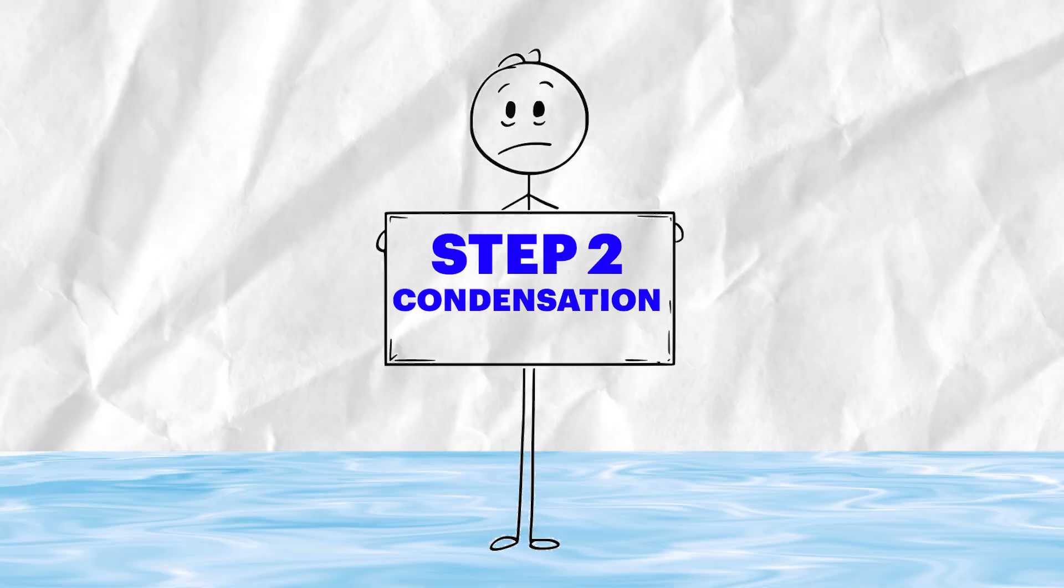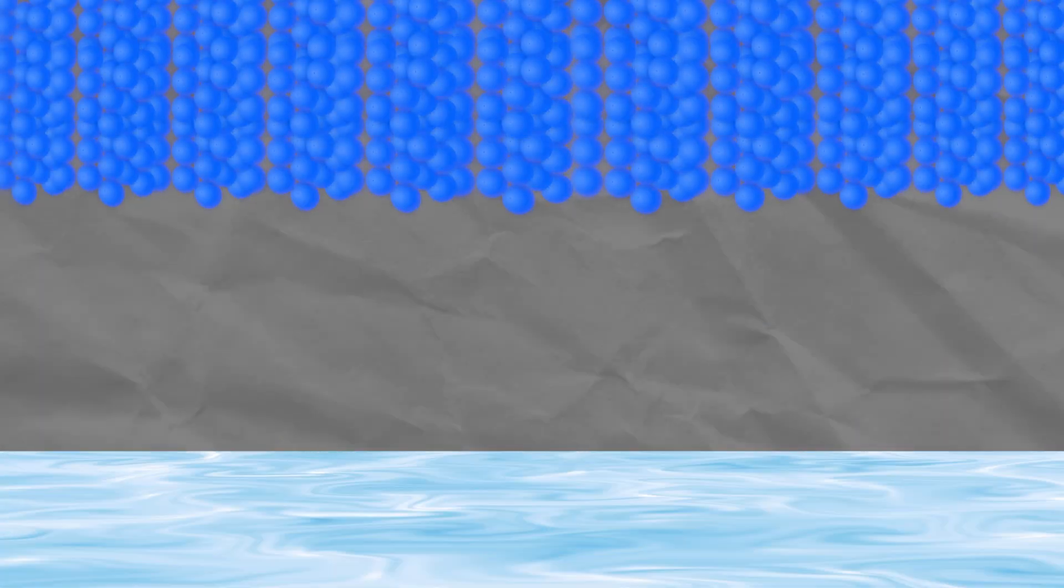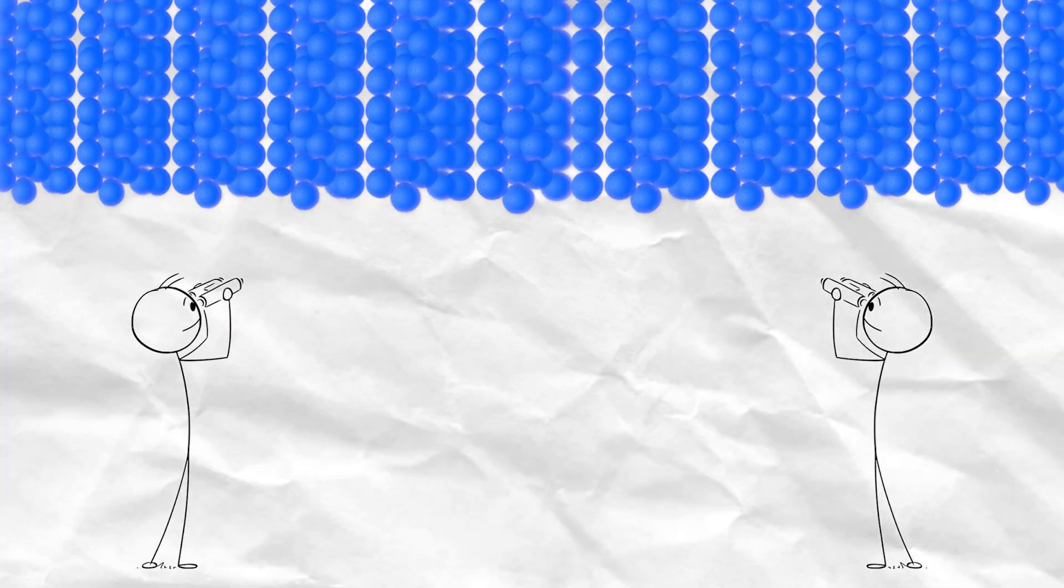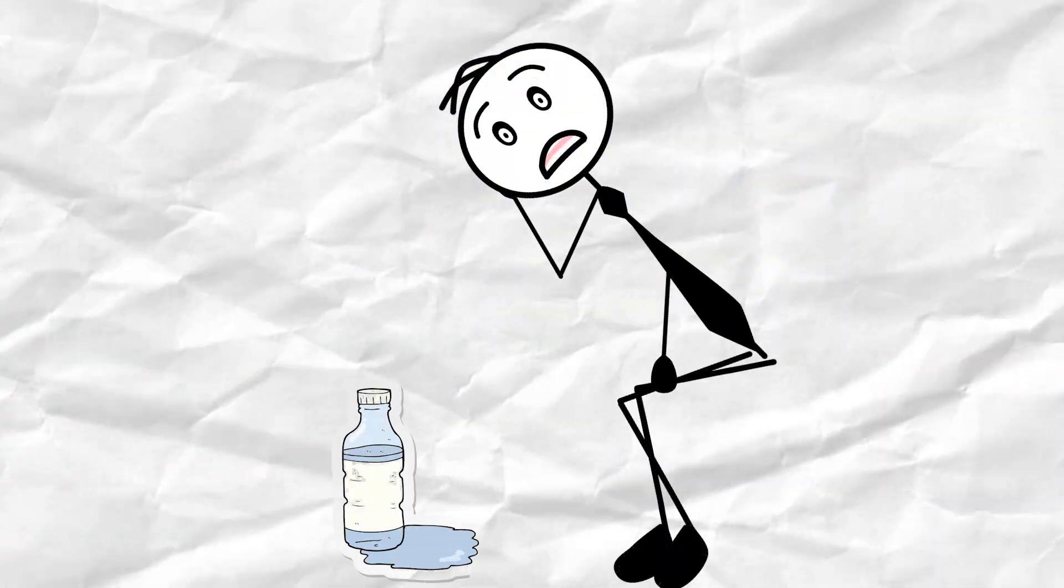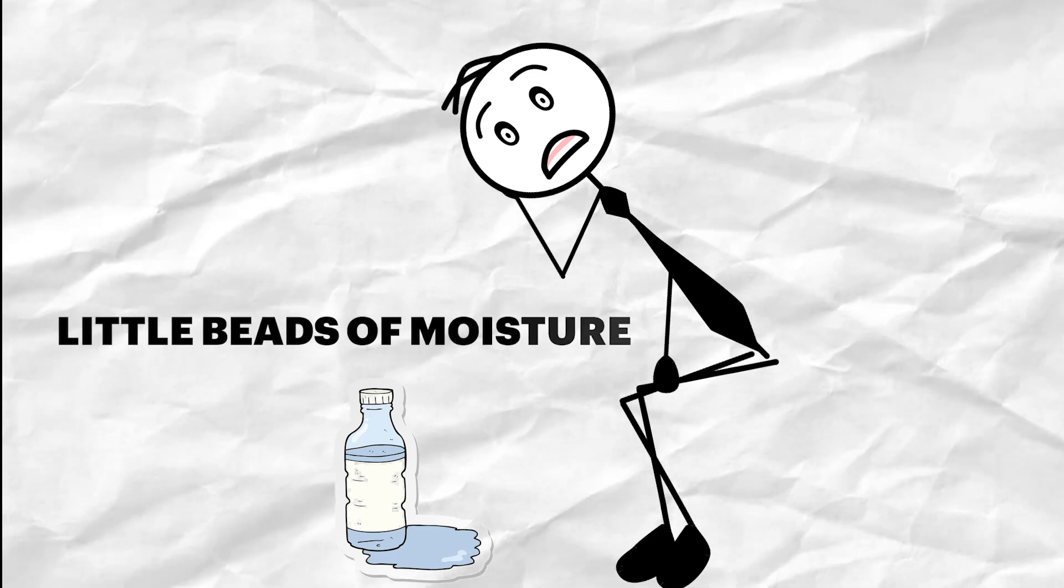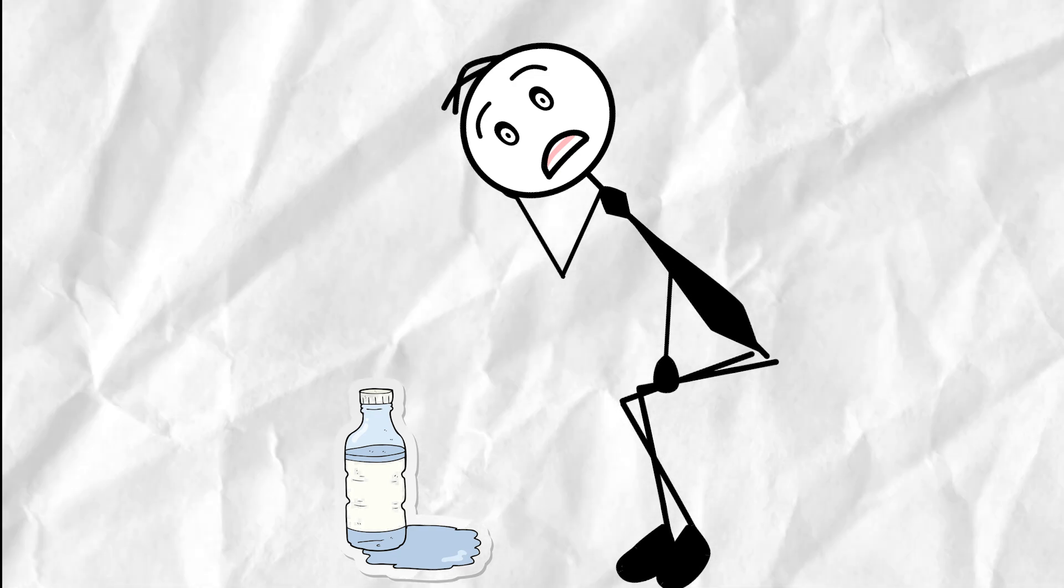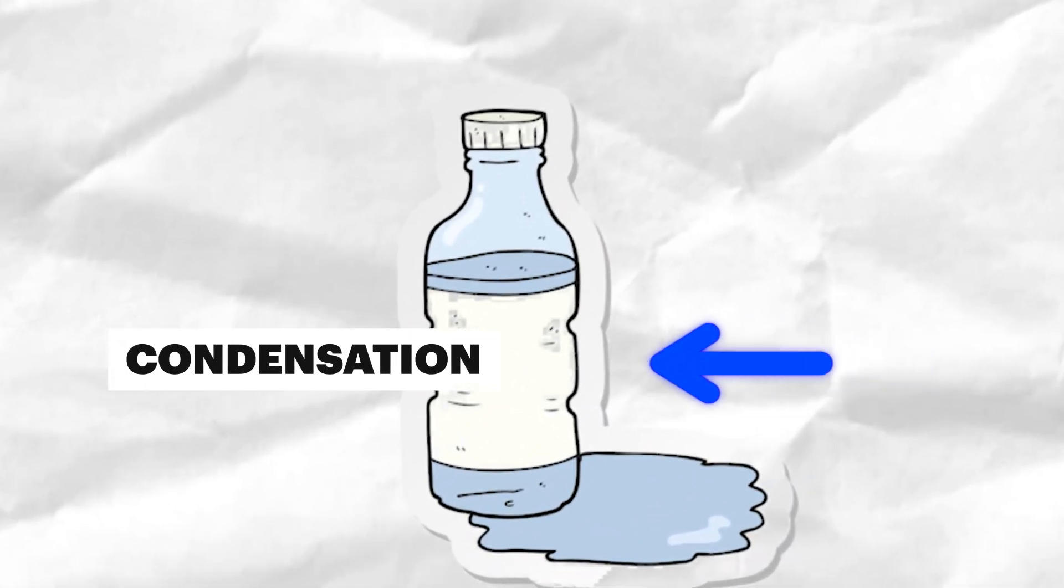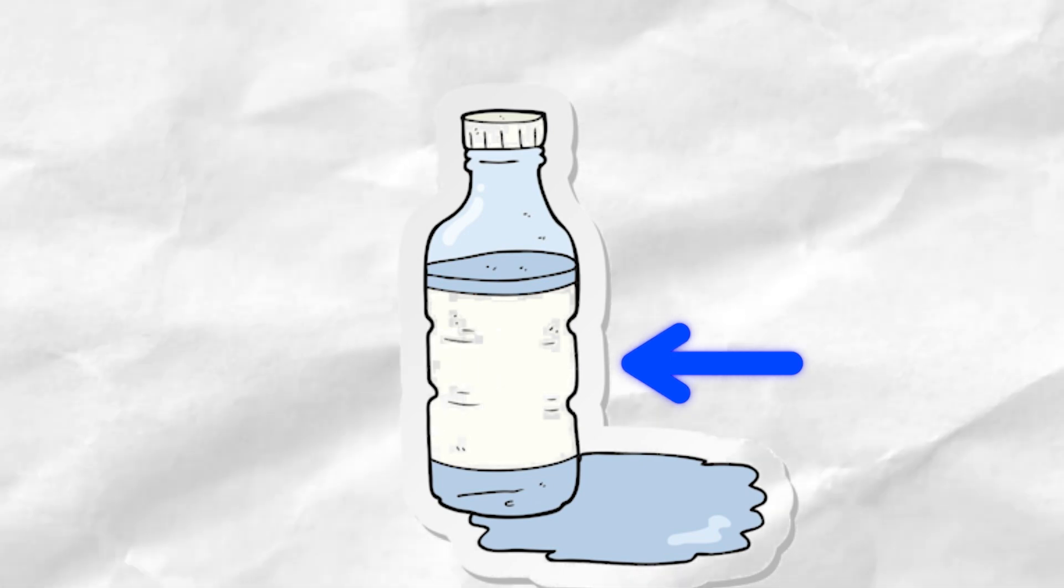Step 2. Condensation. As the warm vapor rises high enough, it meets cooler air. Cooler temperatures slow the vapor down. The molecules start to huddle, they condense, turning back into tiny droplets. Have you ever left a cold water bottle outside on a hot day and saw moisture appear? That's condensation. The vapor in the air hits the cold surface of the bottle and turns back into liquid.